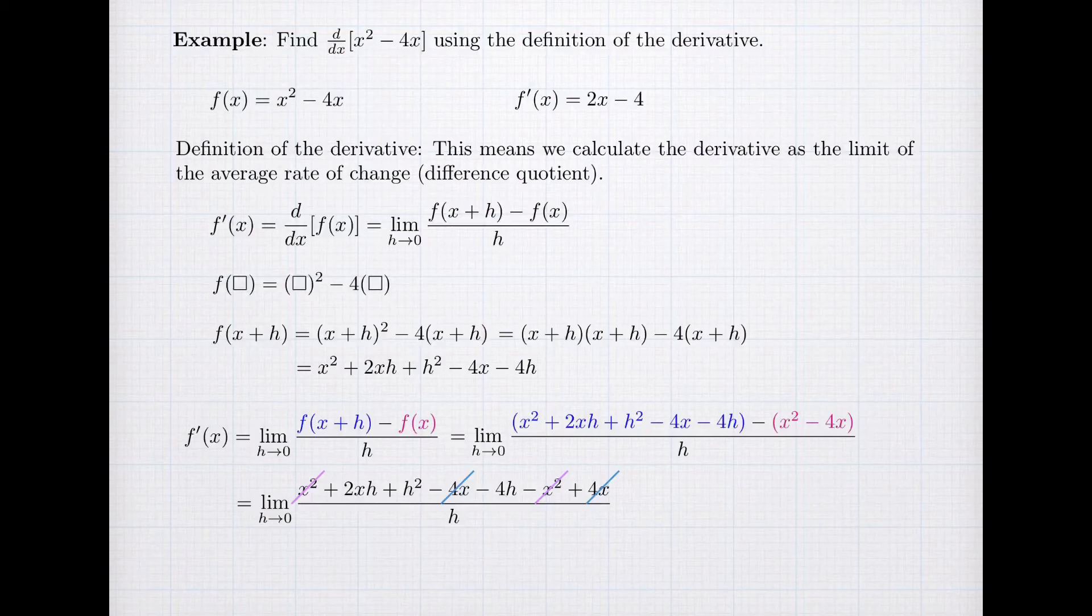I'm left with 2xh plus h² minus 4h. When I do the limit step, I'm going to set h to zero, and I can't do it with dividing by h. So I need to cancel that.